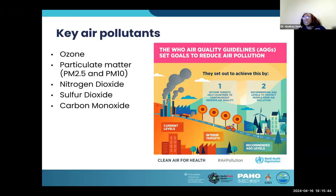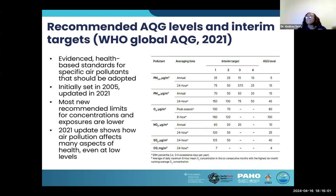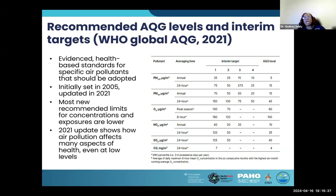The WHO Air Quality Guidelines, or AQGs, set goals to reduce air pollution. You have interim targets that help countries continuously improve air quality, and then you have the recommended AQG levels to protect persons from air pollution. These were updated in 2021 — they were initially set in 2005 — and they are evidence-based health standards for specific air pollutants. Importantly, most of the new recommended limits for concentrations and exposures are lower, showing that air pollution affects many aspects of health even at lower levels than originally thought.